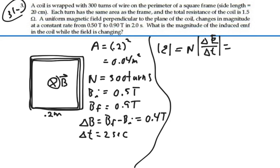In this case, the area won't be changing. So this would be the number of turns times the area, times the change in magnetic field over the change in time.